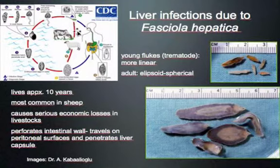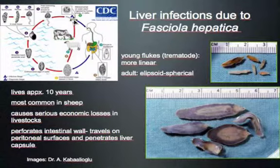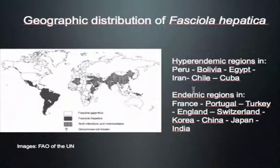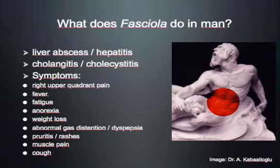The sheep drops the egg, which passes through a snail and attaches to water plants. If eaten — like watercress in England — it can cause fasciola disease. Endemic regions include France, Portugal, England, and Turkey. Hyper-endemic regions are Peru, Bolivia, Egypt, Iran, Chile, and Cuba. Patients from these places should prompt us to think about fasciola.